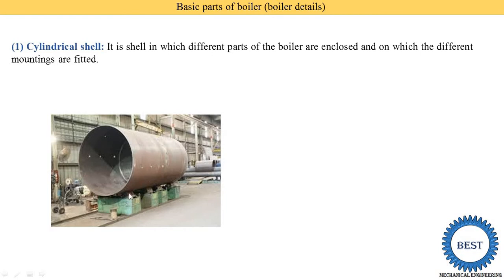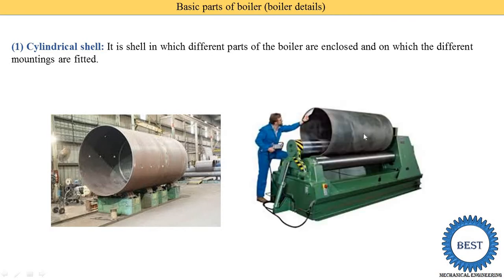The boiler shell is made from a flat plate of metal, generally cast iron. First, the plate is flat like the page of a book, then the sheet metal is wound by using a roller machine. This machine is used to make the cylindrical shell of a boiler, which is the main part inside which all the components are installed.